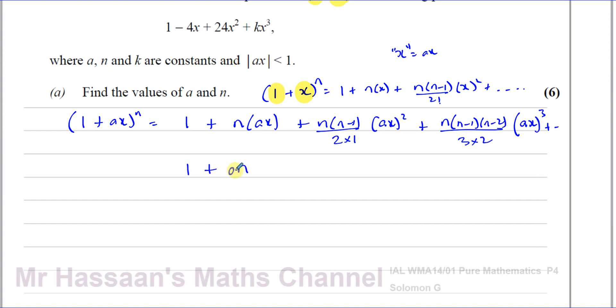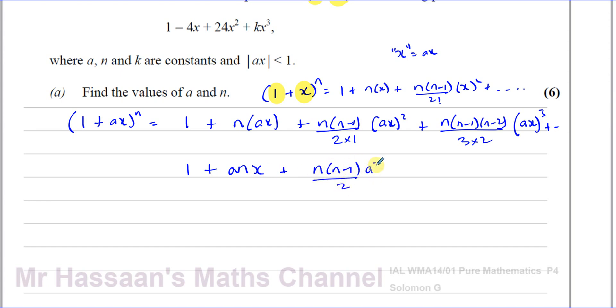Simplifying slightly, we have a·nx for the x term, and n(n−1)/2 · a²x² for the x² term. So comparing the x coefficients, a·n must equal −4.